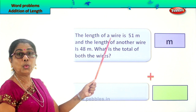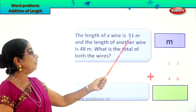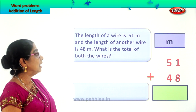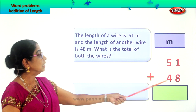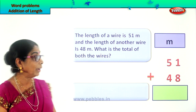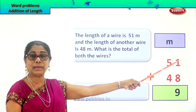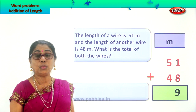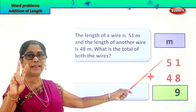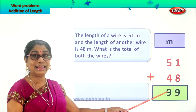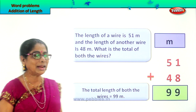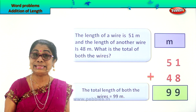The length of one wire is 51 meters, plus the length of the other wire is 48 meters. Now we have to add to find the total. In the ones place, 1 plus 8 is 9. In the tens place, 5 plus 4 is 9. So the total length of the two wires equals 99 meters. The total length of both the wires is equal to 99 meters. Did you enjoy working the word problem?